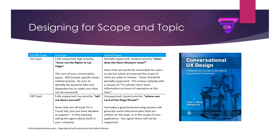You think about what's going to be in scope and what topics the bot will support — on topic and off topic — and you make a grid. In each of the quadrants you place relevant information. Starting top left: something that is both in scope and on topic is fully supported and high priority. For a travel website, 'show me the flights to Las Vegas' is a classic example — on topic and in scope. This is the core of your conversation space, so identify your backend APIs and dependencies.